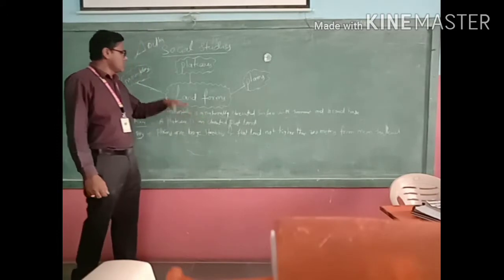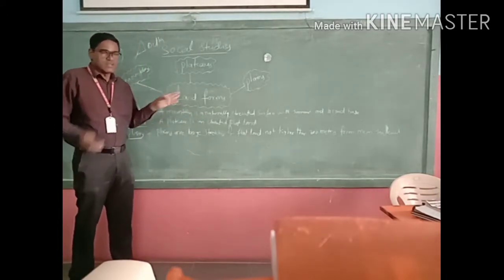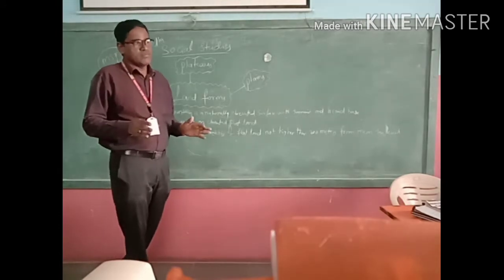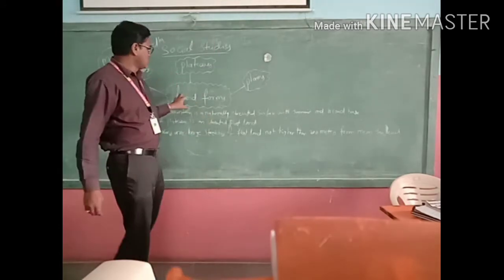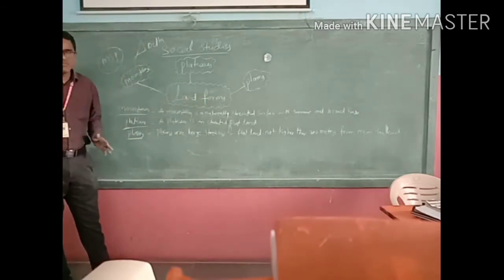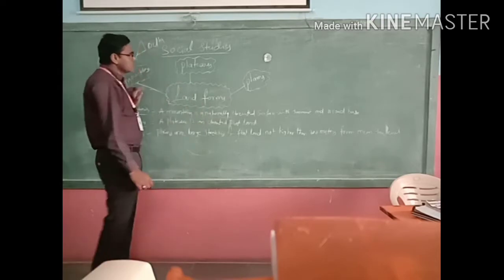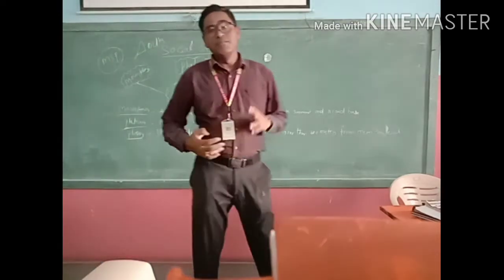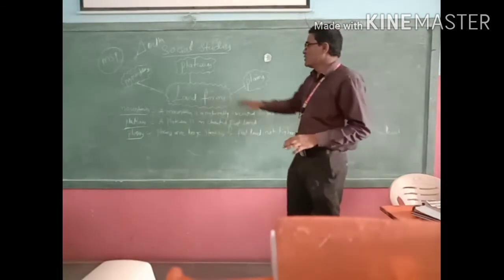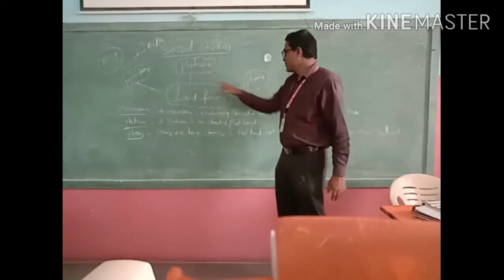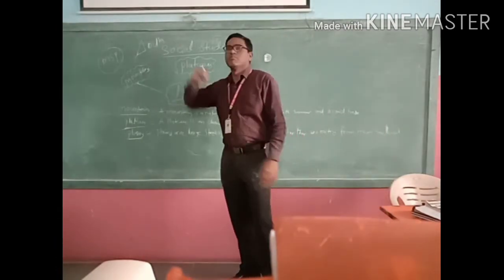On the Earth, landforms are not the same — they are uneven, up and down. Landforms are divided into three types. What are the three types of landforms? One is plateaus, the second one is plains areas, and the third one is mountains.